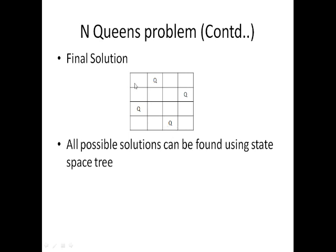All possible solutions can be found in the state space tree. This is not the only possible solution — there are many possible solutions for the 4-Queens problem.